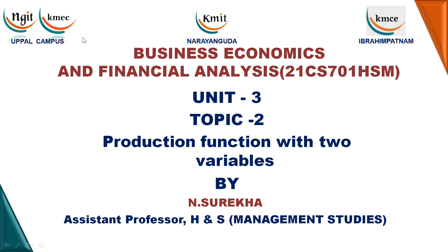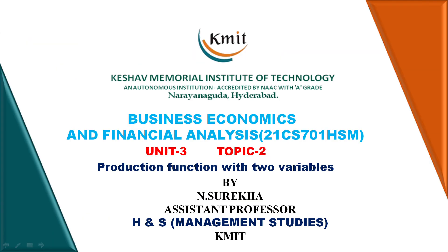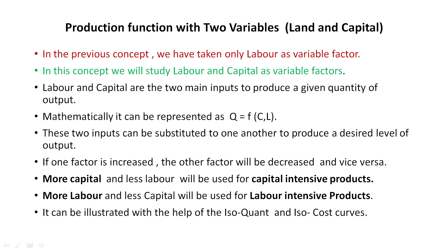Hello everyone, welcome to my lecture on Topic 2 of Unit 3, that is Production Function with Two Variables. The production function with two variables — the variables considered here are land and capital. In the previous concept we already learned about the production function with a single variable, increasing the labor inputs and observing the relevant output. In this concept we will study labor and capital as variable factors.